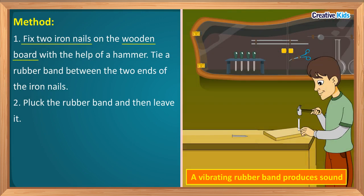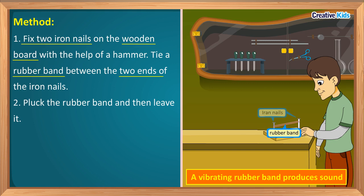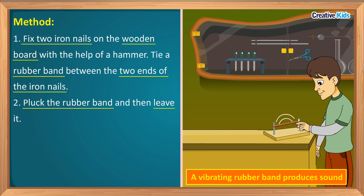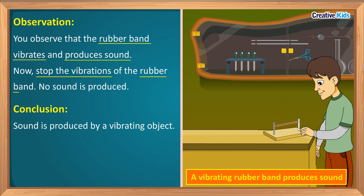First, fix two iron nails on the wooden board with the help of a hammer, then tie a rubber band between the two ends of the iron nails. Now pluck the rubber band in the middle and then release it. You will observe that the rubber band vibrates and produces sound. Now stop the vibrations of the rubber band by touching it with your hands and check whether sound is still being produced.